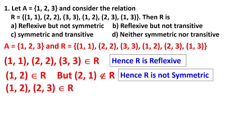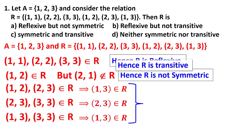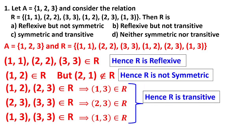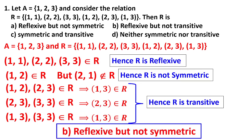For transitivity: (1,2) and (2,3) are present, and (1,3) is also there. First is related to second, second is related to third, therefore first and third are related. After checking all cases in the same fashion, it is transitive. However, since we can directly conclude it is reflexive but not symmetric, the correct answer is option A. This checking of transitivity was not strictly required.